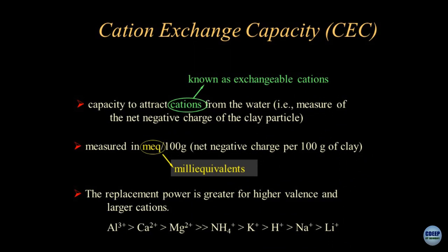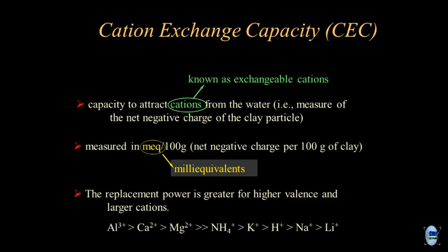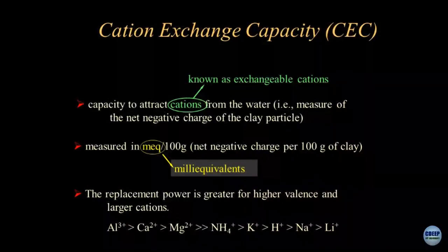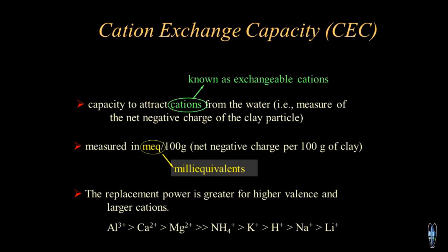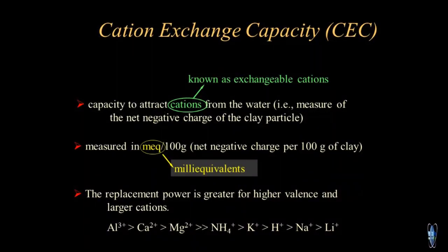By definition, the cation exchange capacity (CEC) of clay particles is the capacity of these particles to exchange cations with the environment. The unit of CEC is milliequivalent per 100 grams. The replacement series shows alumina has a tendency to replace calcium (valence 3), then calcium, magnesium, ammonium ions, potassium, H ions, sodium ions and so on. At third year level it is not expected you know all these things, but for those interested in advanced geo-environmental engineering and process engineering, this is a must.